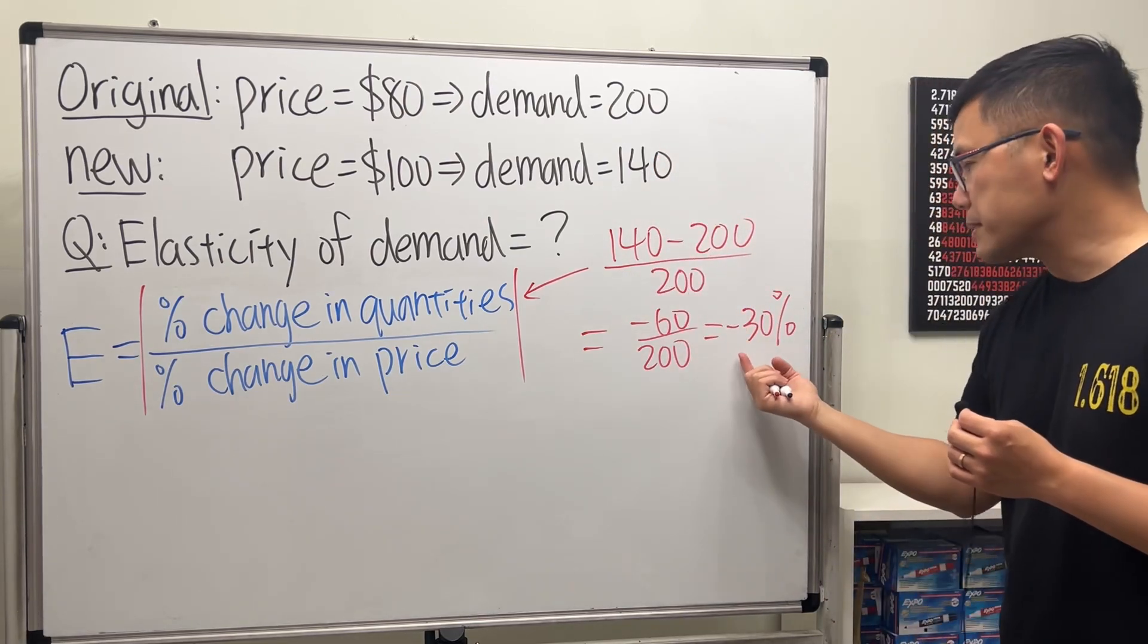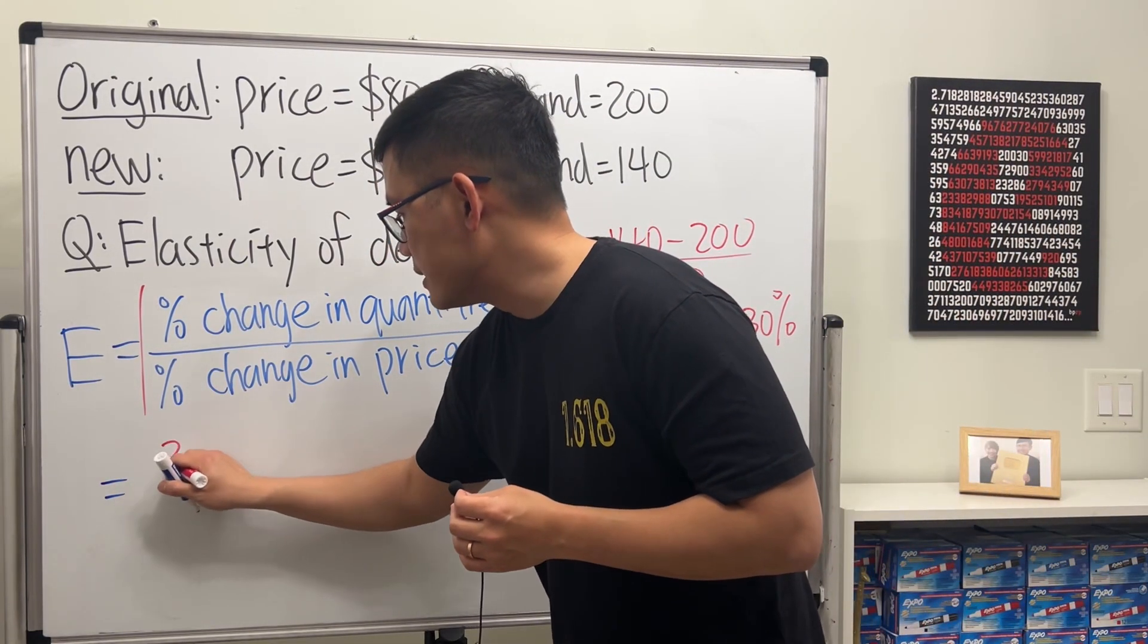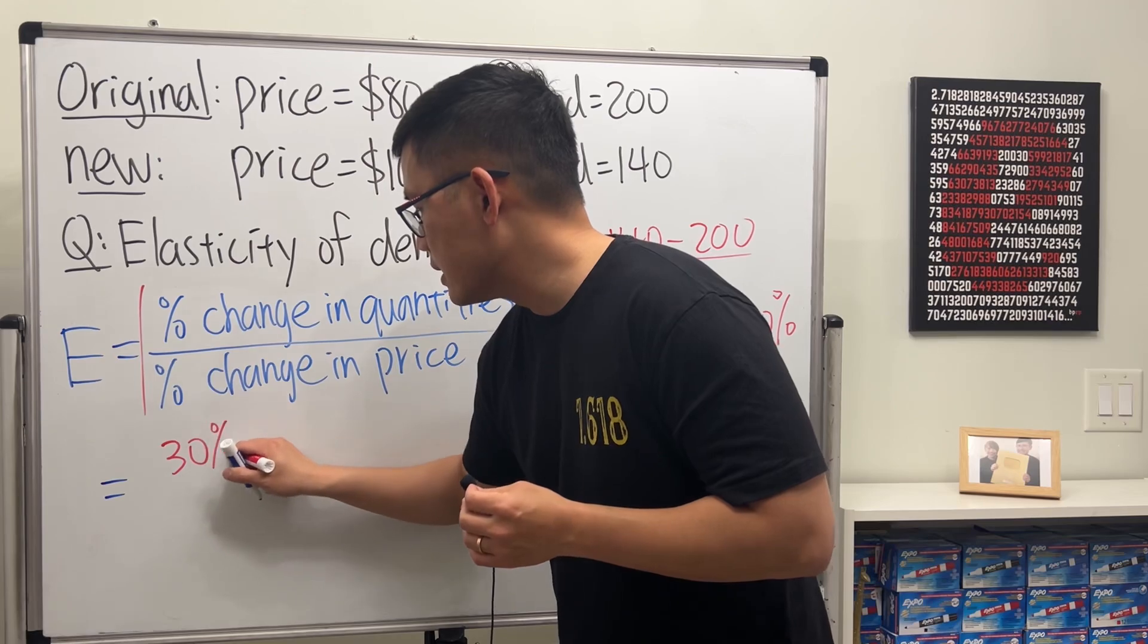Work that on your calculator, that's negative 30%. So you can see that the percentage change in quantities drops by 30%. So on the top here this is going to be 30%.